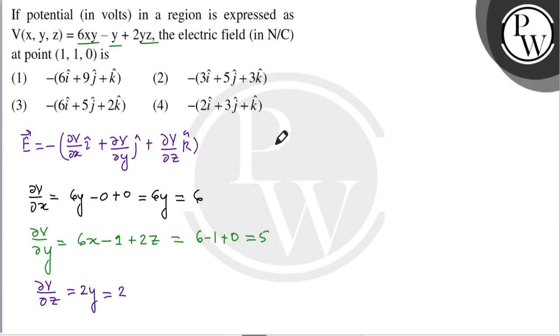Isliye, electric field ki value E is equal to minus 6i plus 5j plus 2k. So minus 6i plus 5j plus 2k, which is answer number 3. I hope you understood the solution, thank you.